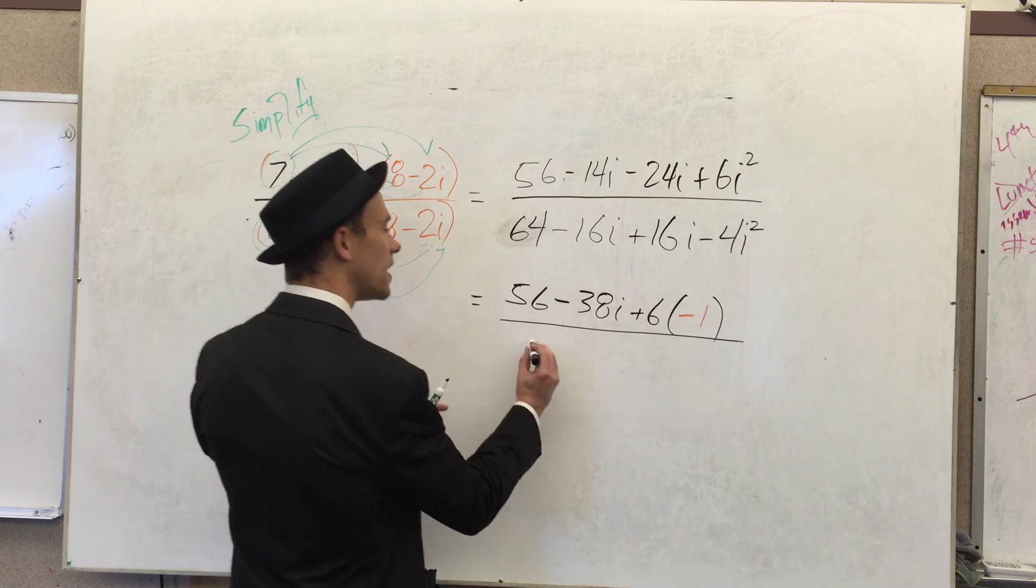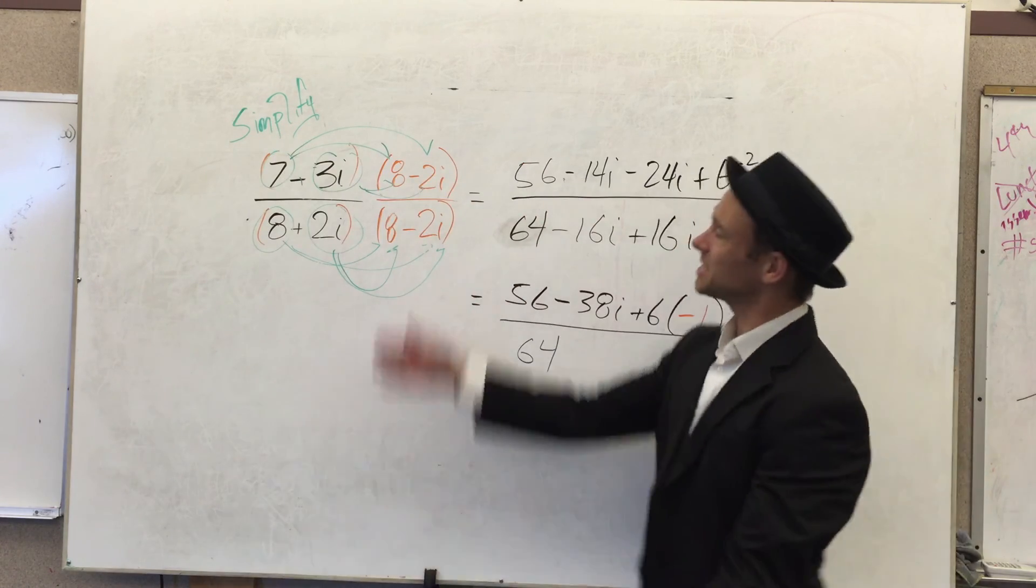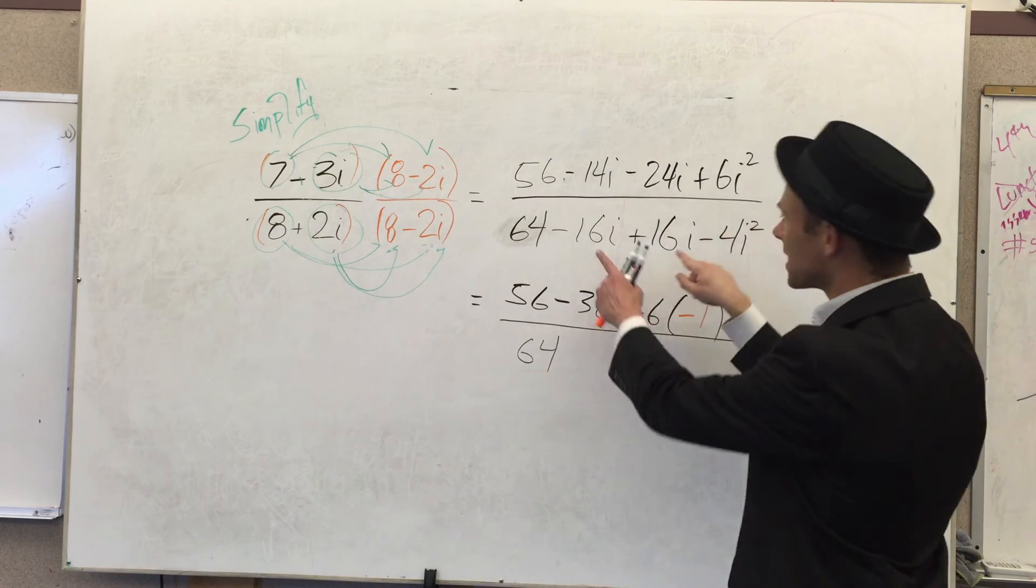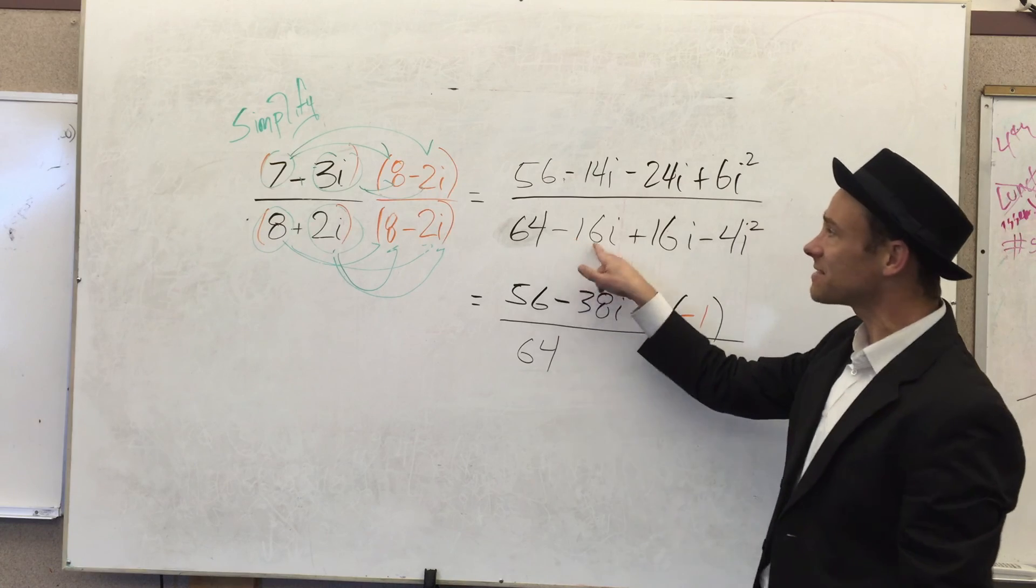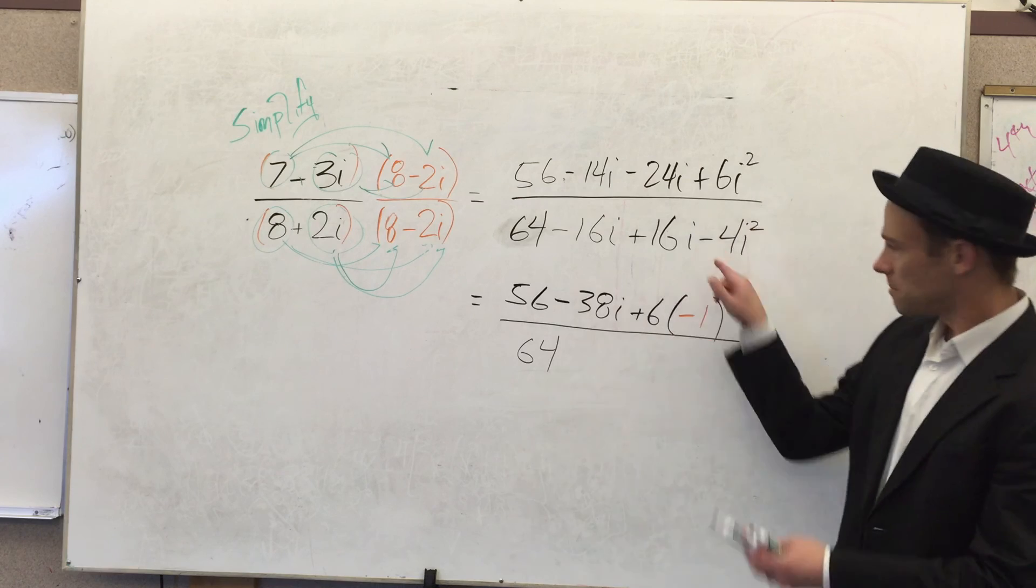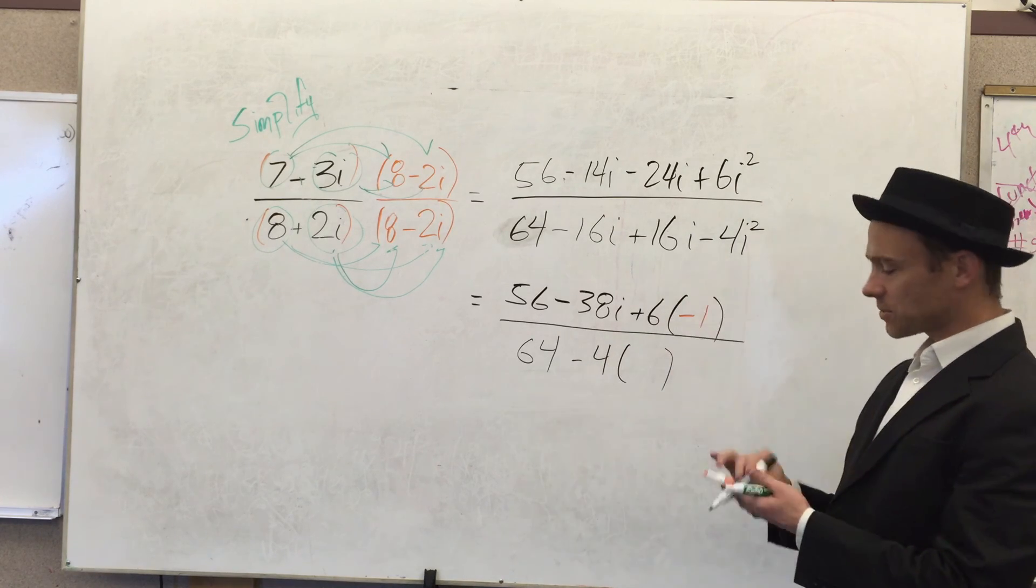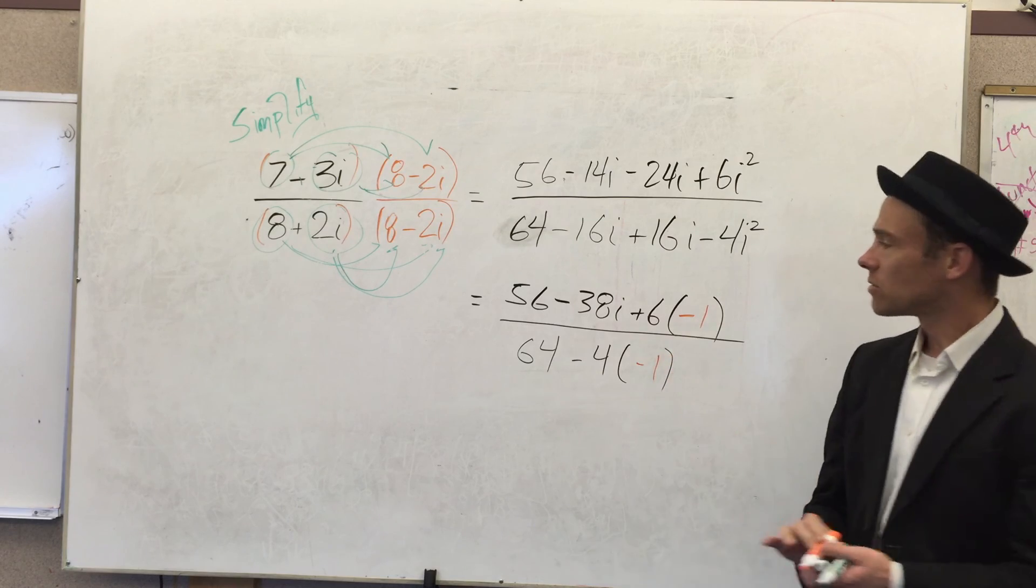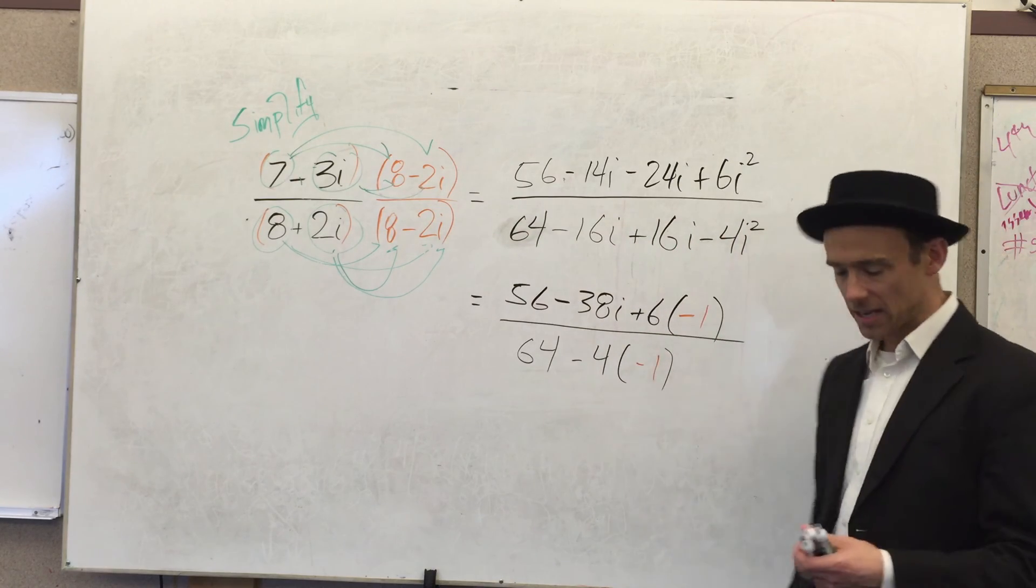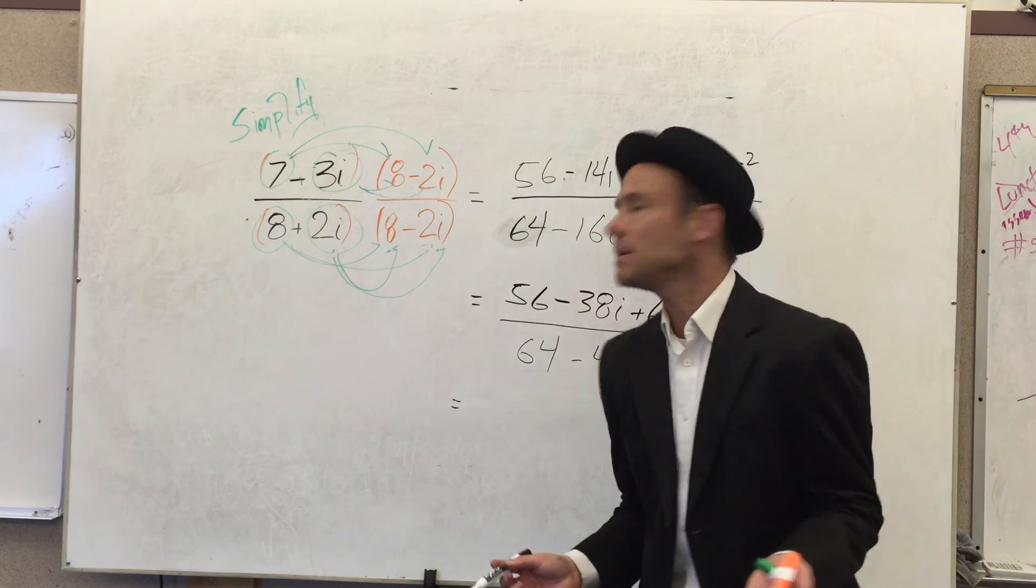I'm almost done. Stay with me. 64. The whole reason we're doing this is because the numerator had the i and we didn't want that. So look, I see you later. Negative 16i plus 16i is zero. Nothing. Move on. Minus 4—i squared is negative one. We always make, when we're simplifying with the imaginary unit, we always make our i squares go to negative one.